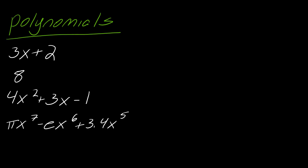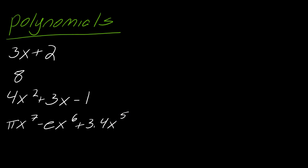This would still be a polynomial because you can have whatever number you want as a coefficient. Just as a reminder, e is also technically a number. The big thing, though, is that these exponents need to be whole numbers. A polynomial doesn't have to be a whole string of things — it could also just be one singular variable with a whole number exponent. So this whole list here, these are all examples of polynomials.